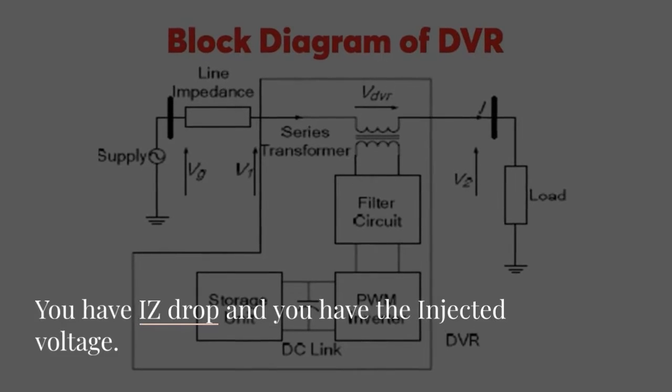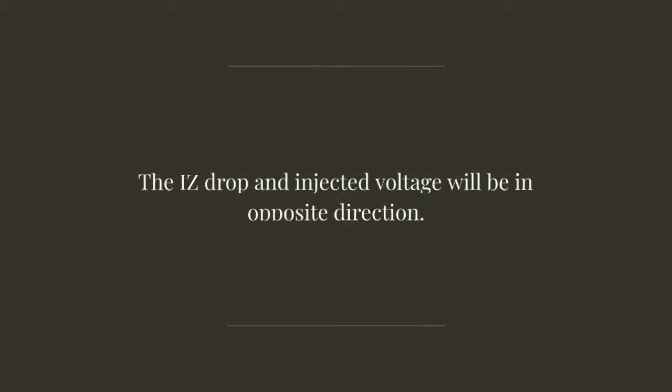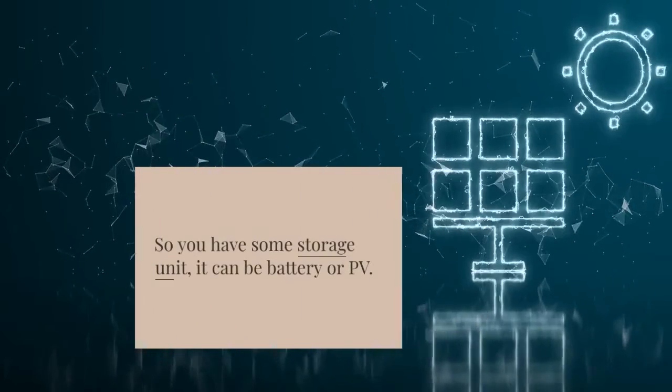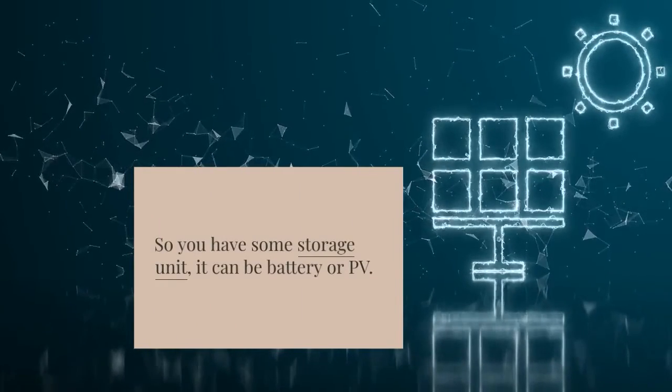You have IZ drop and you have the injected voltage. The IZ drop and injected voltage will be in opposite direction. So you have some storage unit. It can be a battery or PV.